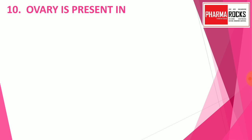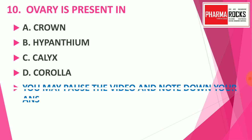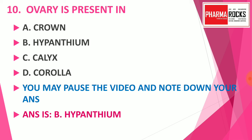Question number 10: Ovary is present in — option A: crown, option B: hypanthium, option C: calyx, option D: corolla. You may pause the video and note down your correct answer. If you like our content and the quality of the MCQs, you may comment in the comment section and subscribe this channel for more educational videos. This is part 4 of the quiz series; links to quizzes 1, 2, and 3 are in the description box. The correct answer is option B: hypanthium. So the ovary is present in hypanthium.